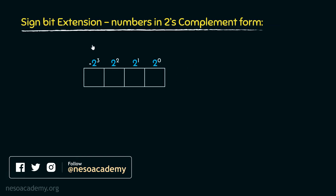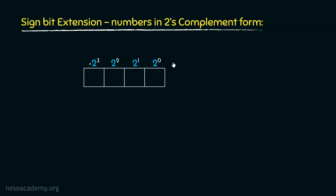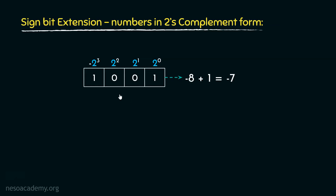For a 4-bit register storing a twos complement number, the place values are 2 raised to the power 0, 2 raised to the power 1, 2 squared, and minus 2 cubed. Say we store the value 1001. This one gives us minus 8 and this one gives us 1, so minus 8 plus 1 gives us minus 7. In other words, if we store minus 7 in twos complement form in a 4-bit register, the storage will retain the values 1001.